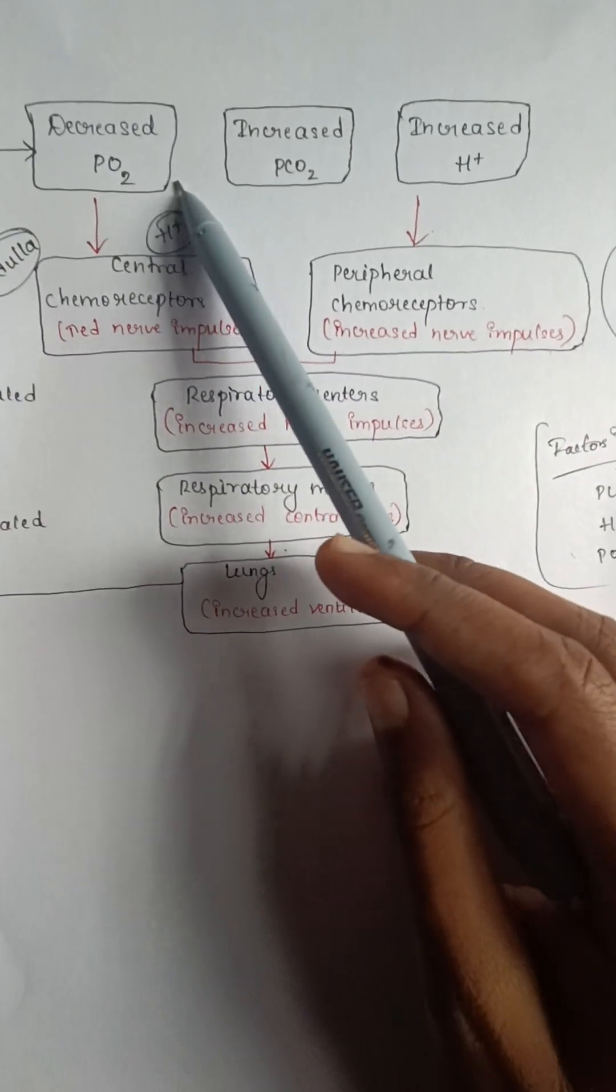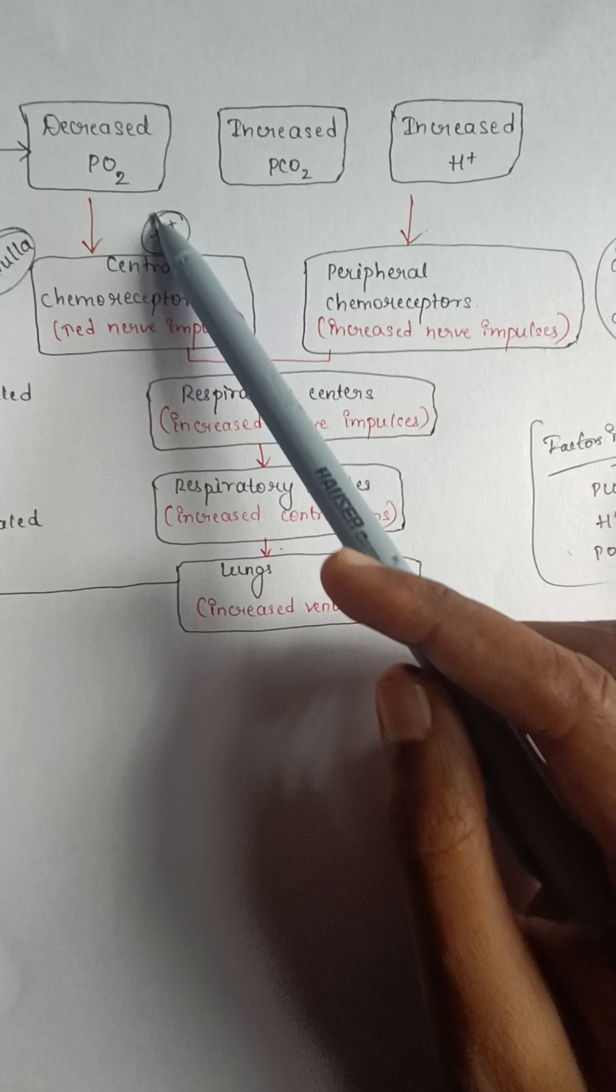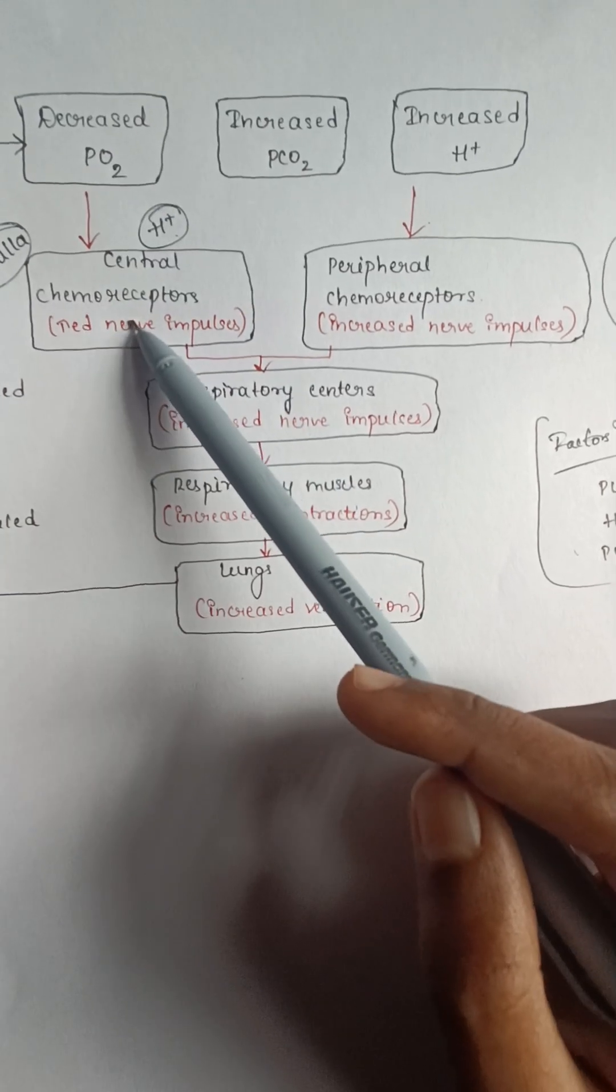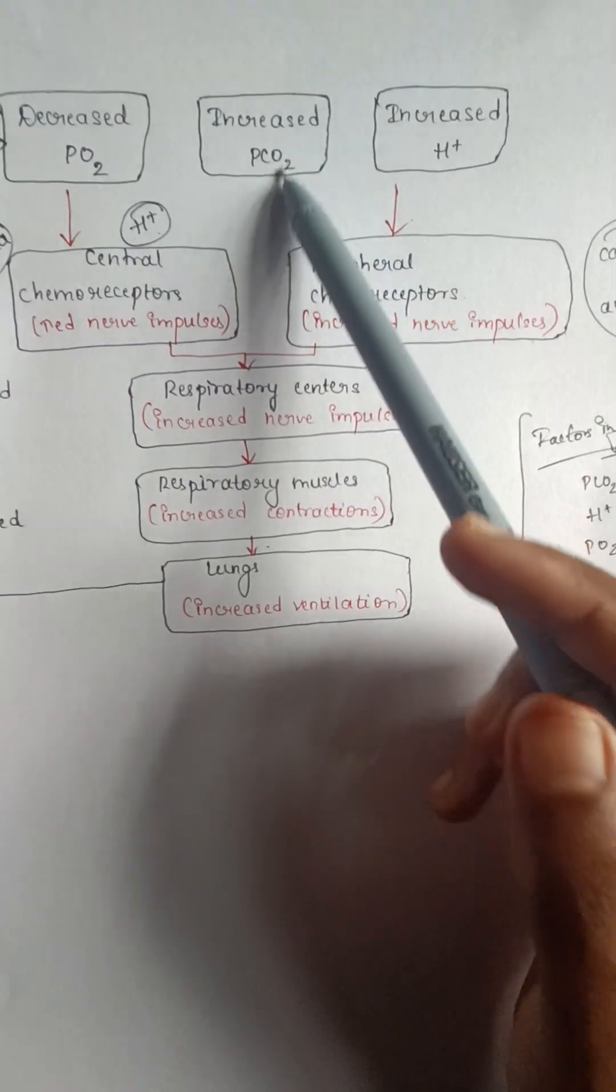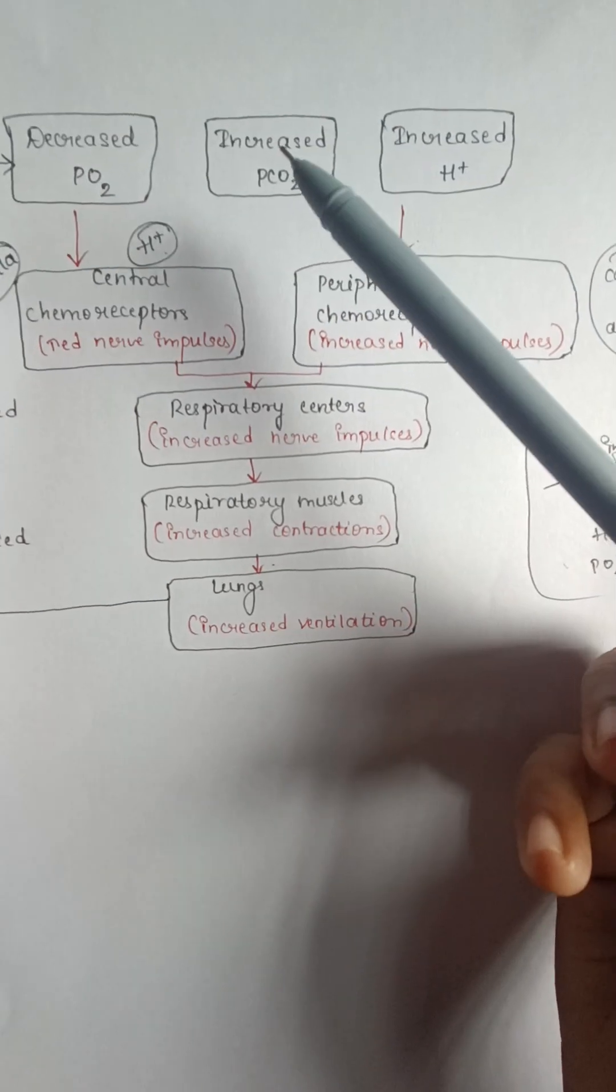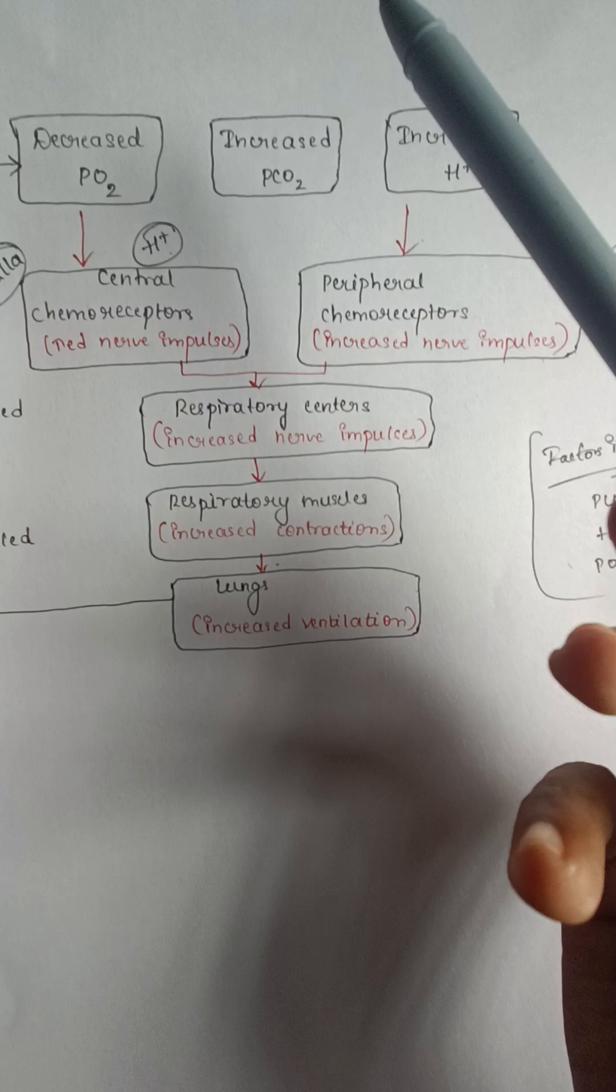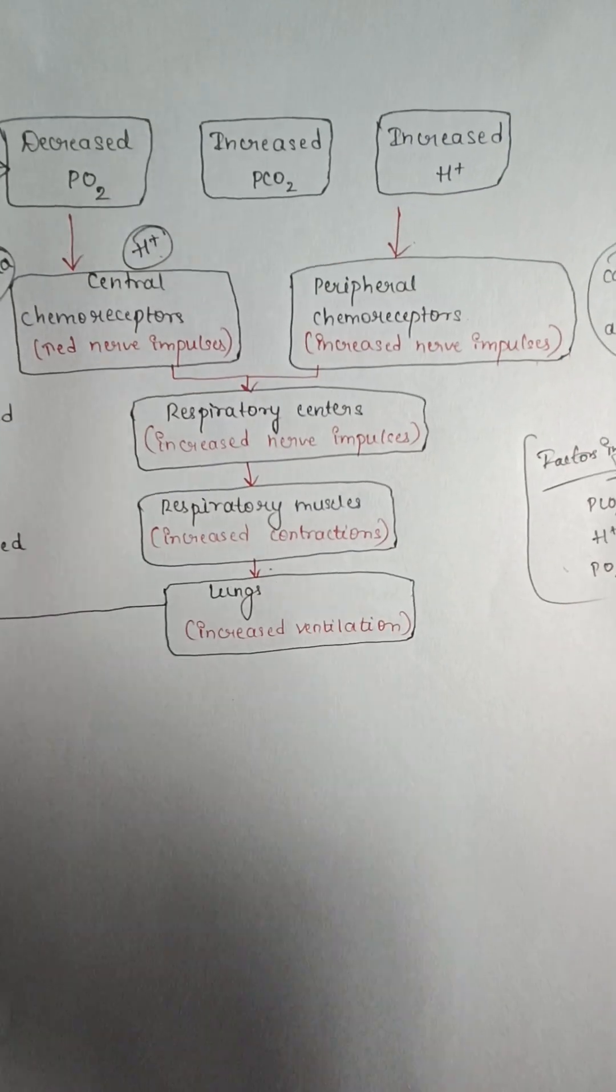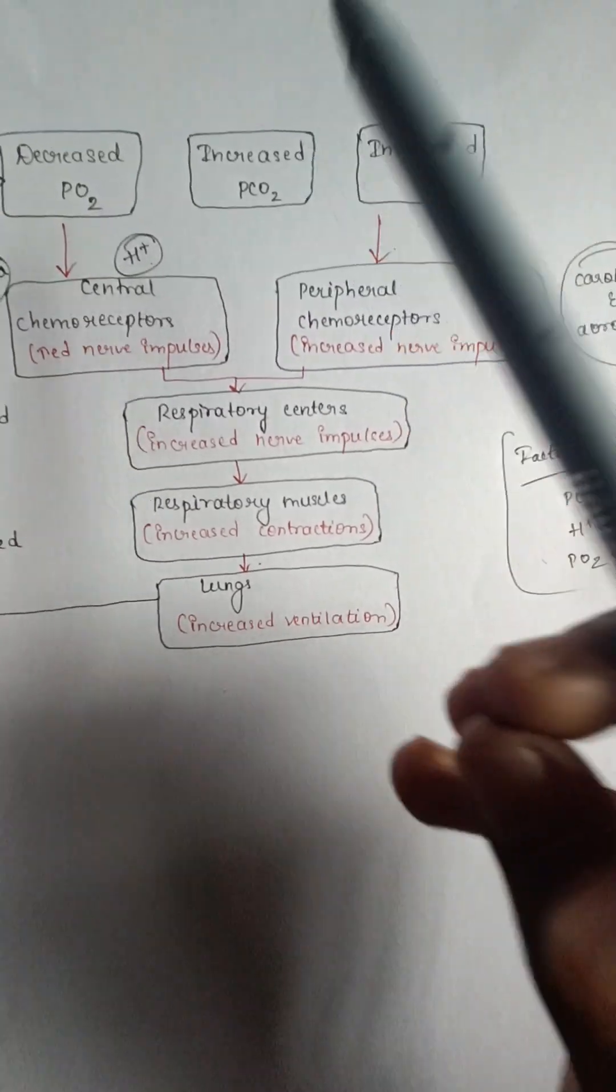When there is a decrease in oxygen, the chemoreceptors get activated. When there is an increase in carbon dioxide, it stimulates the blood. Mild to moderate increase in CO2 concentration can also increase the rate and depth of respiration.